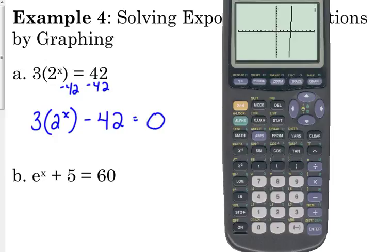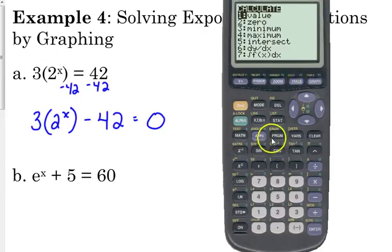And we're looking for where this equals zero, so where it crosses the x-axis. Typically, we're only going to have one solution for these equations. So we need to find that zero. So second trace, it looks, zero is option number two.